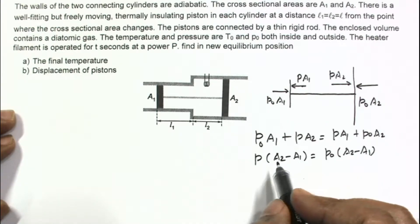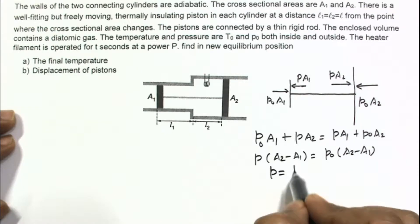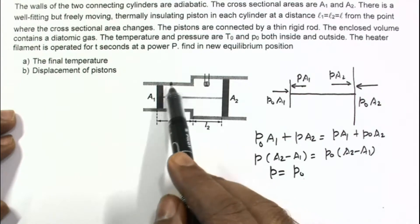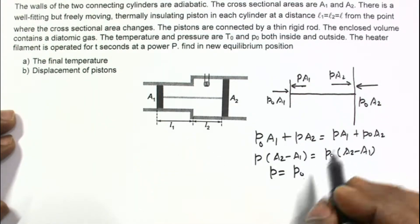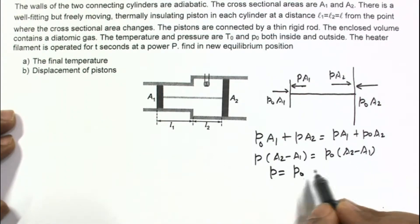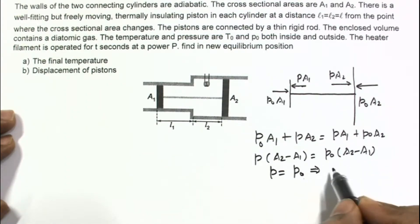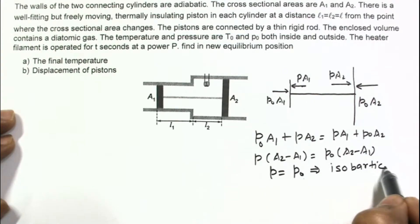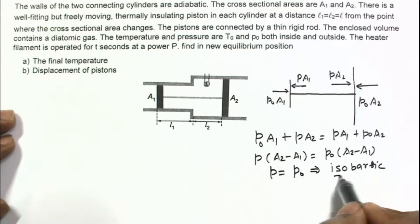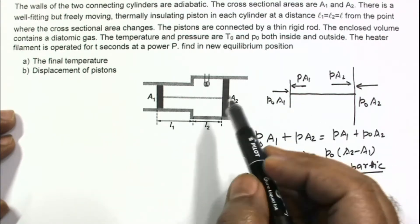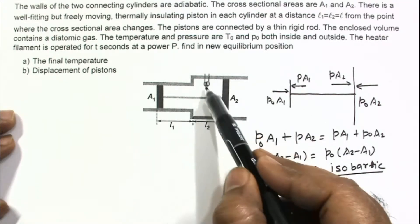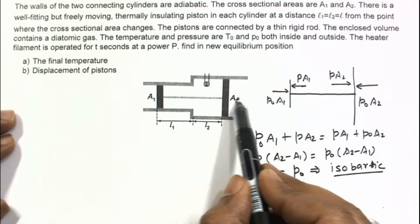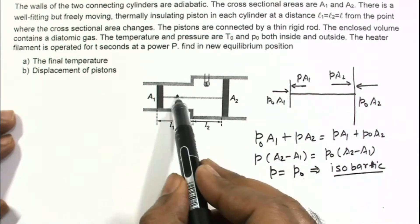From the equilibrium equation, P is equal to P0, which means pressure inside remains constant during the process. We conclude that this is an isobaric process. Heat will come in and the gas will try to expand — the first piston moves towards the right and the second piston also moves towards the right.